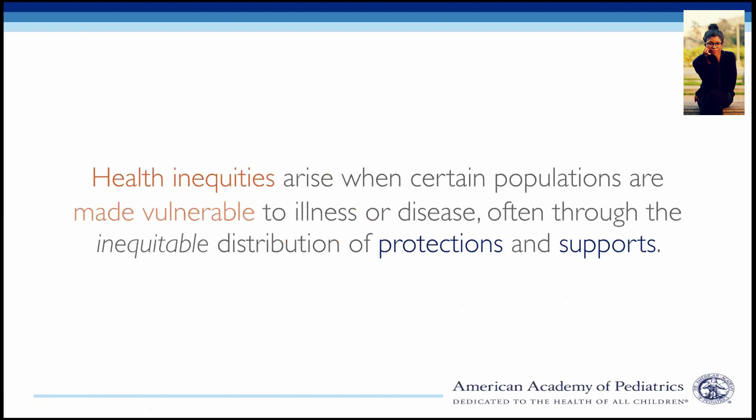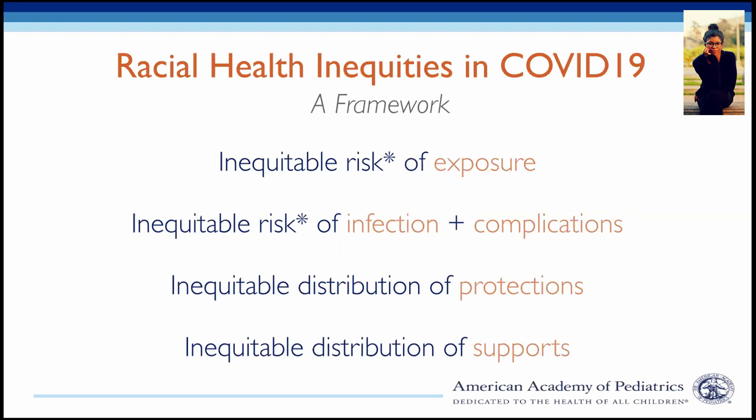Health inequities arise when populations are made vulnerable to illness by practices, policies, laws, or norms that inequitably distribute protections to prevent people from getting sick and supports to ameliorate sickness. To better understand the racial health inequities emerging amid COVID-19, we'll explore four conditions that shape who gets sick and who gets well: the inequitable risk of exposure, the inequitable risk of infection and complications, the inequitable distribution of protections, and the inequitable distribution of supports.